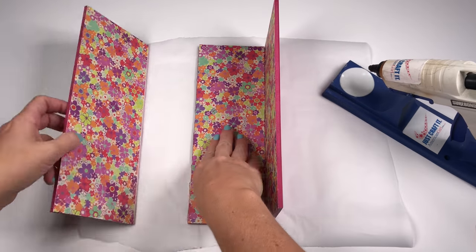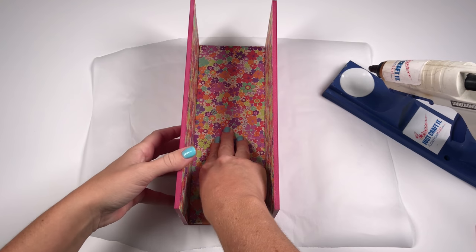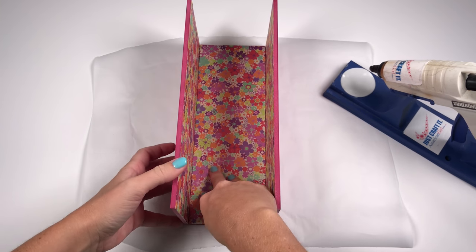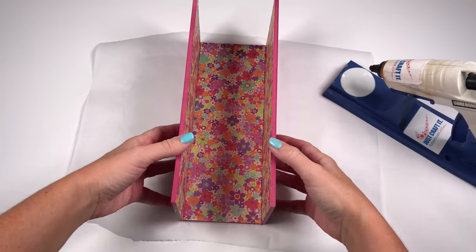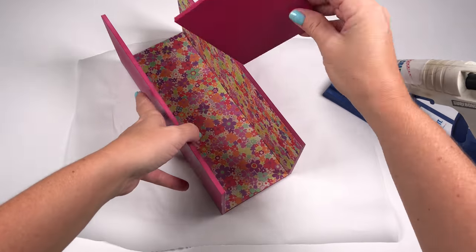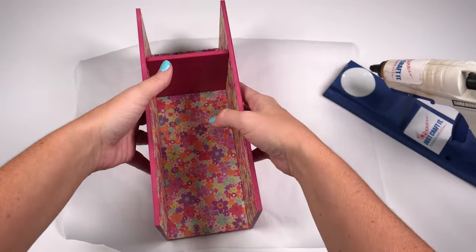Next, apply glue to the other open edge of the back wall, and press the left side right up against it. Hold it in place until the hot glue is dried, and if any hot glue has seeped out the sides, wait until it's cooled off, and you can rub it off.